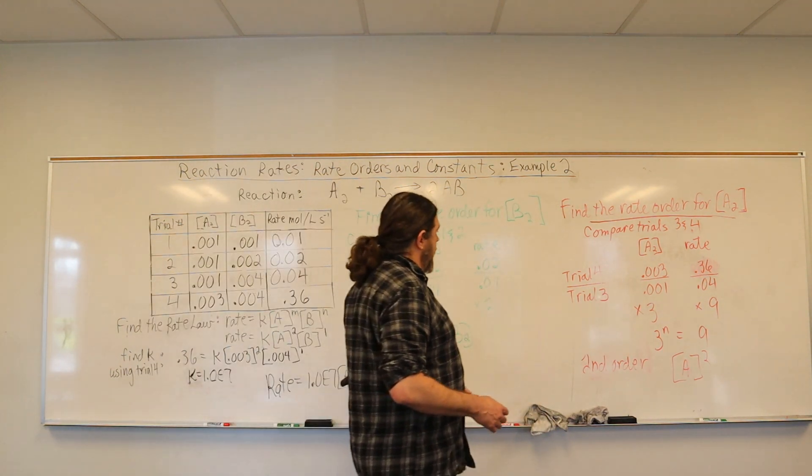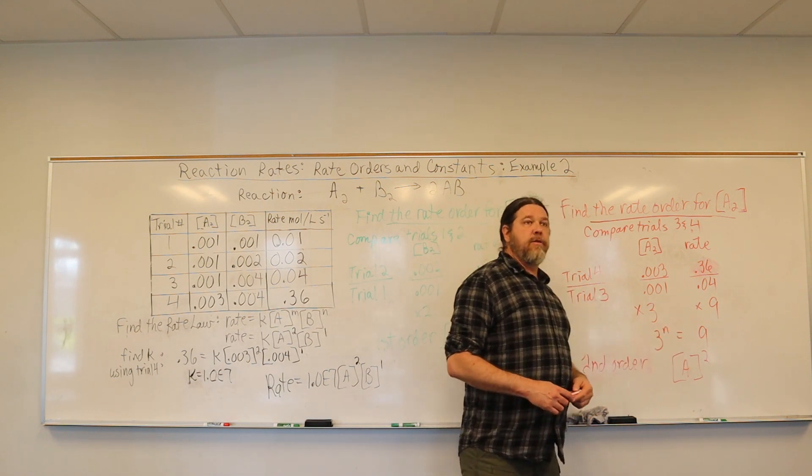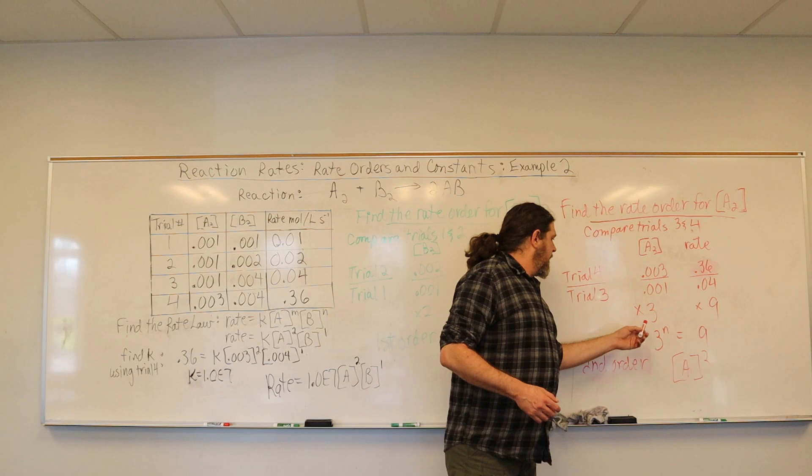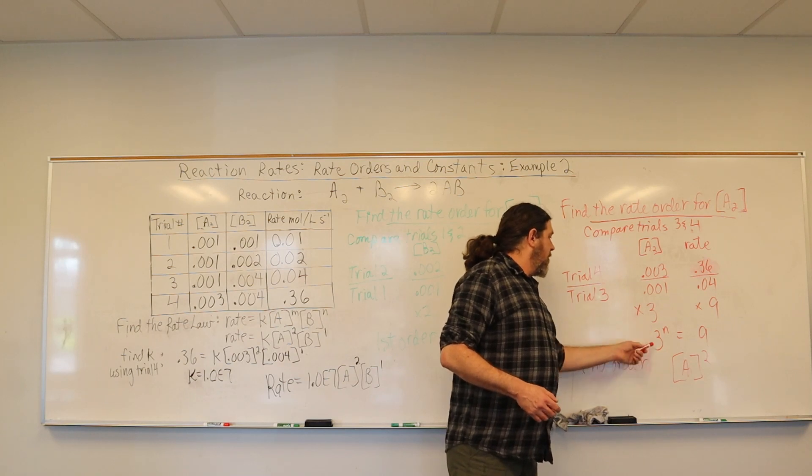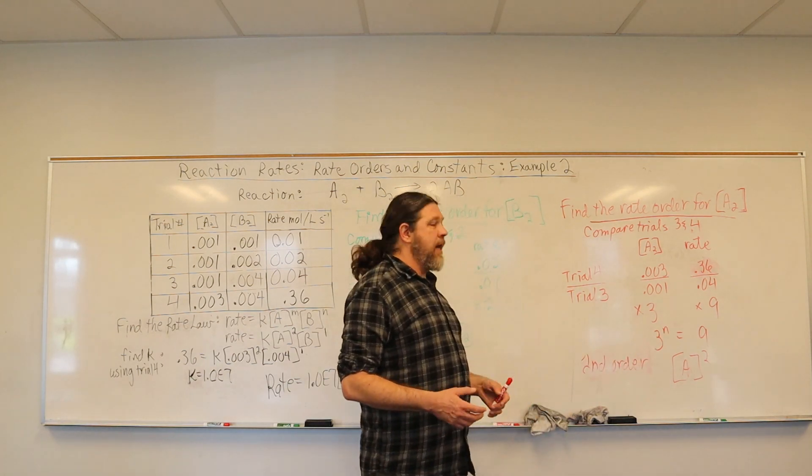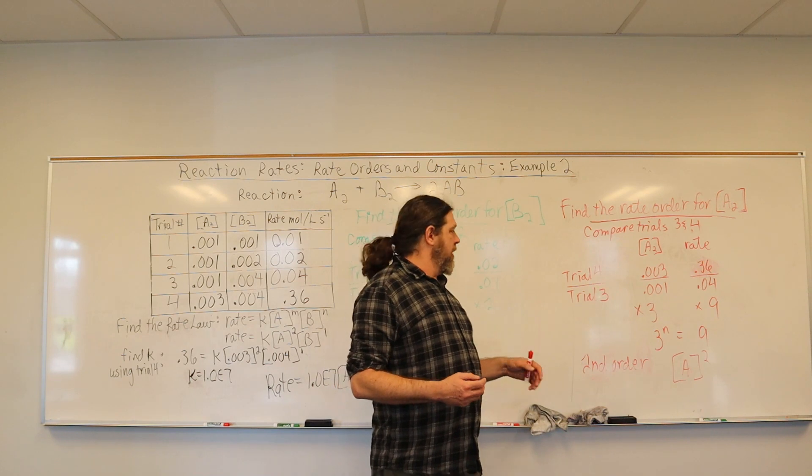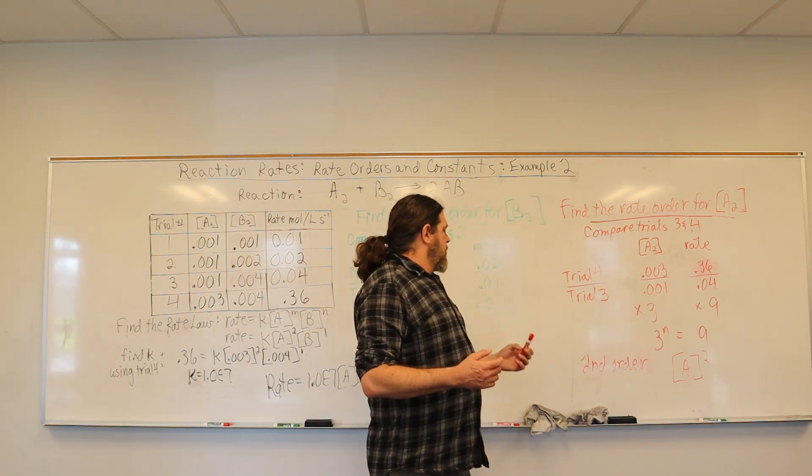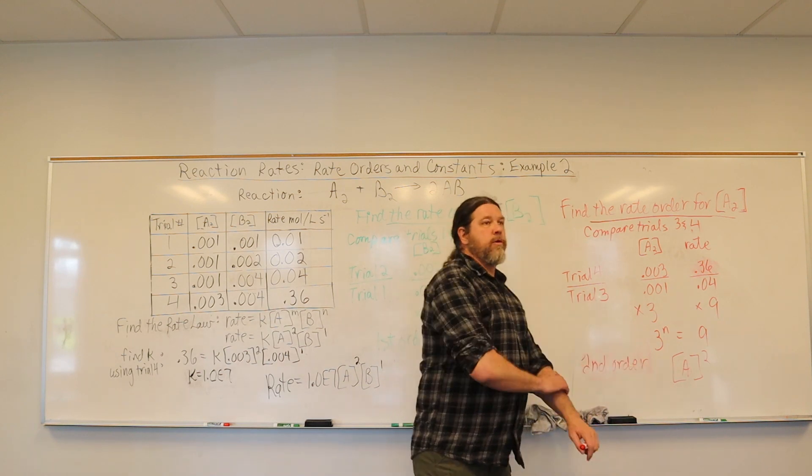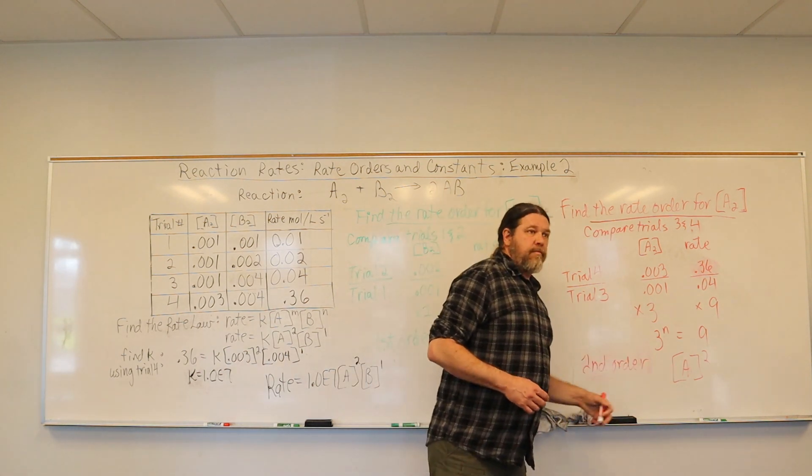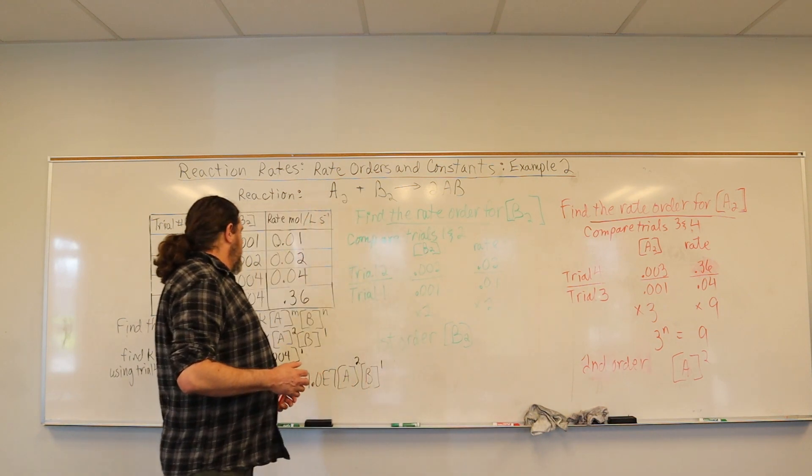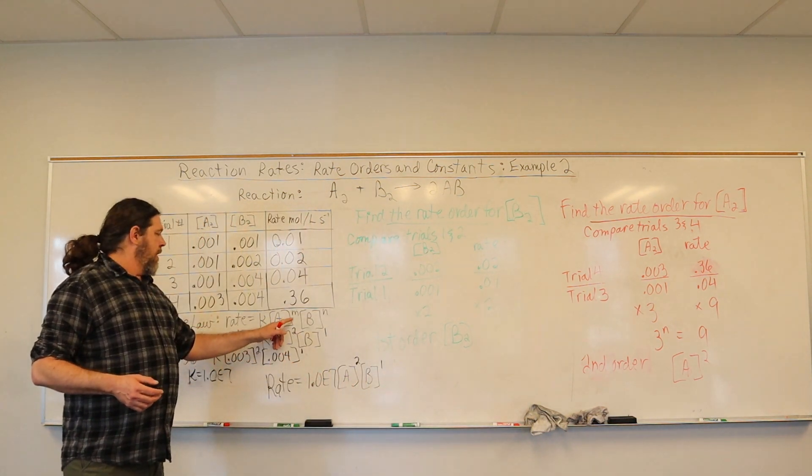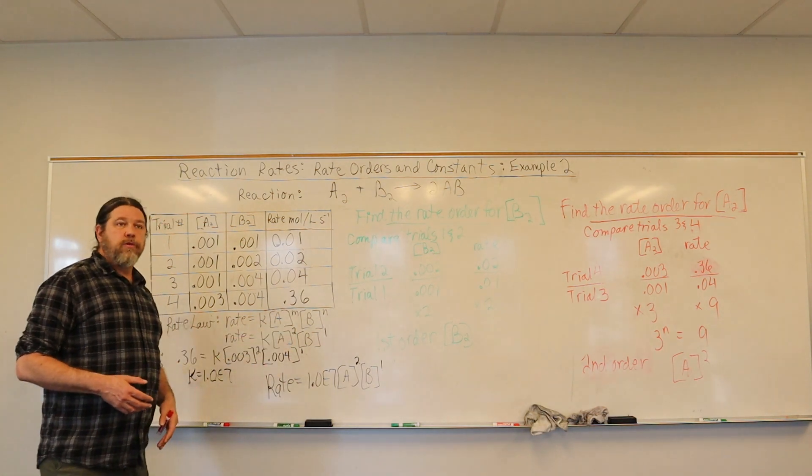And so, if we simply turn this into an exponential expression, that is 3 to the second power is 9, or 9 divided by 3, 3 squared is 9, and so we would call this the second-order, so that particular reactant gets a squared-order value as its exponential degree.